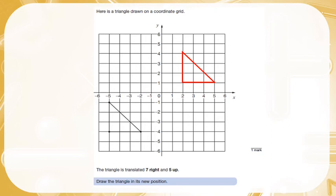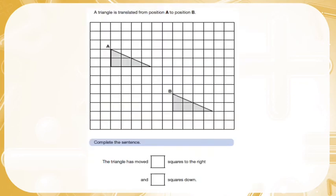Right, next question then. A triangle is translated from position A to position B. Complete the sentence: The triangle has moved ___ squares to the right and ___ squares down. Now you must go from point A to point B. You could go from another point in the triangle to the same point in the other one, but if they've given you ones with letters, I would definitely go for those ones.